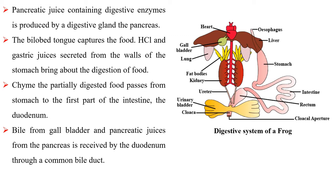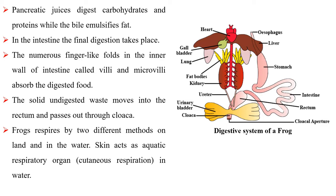Bile from the gallbladder and pancreatic juices from the pancreas are received by the duodenum through the common bile duct. Pancreatic juices digest carbohydrates and proteins while bile emulsifies fat. In the intestine, the final digestion takes place. The numerous finger-like folds in the inner wall of intestine called villi and microvilli absorb the digested food. The solid, undigested waste moves into the rectum and passes out through the cloaca.